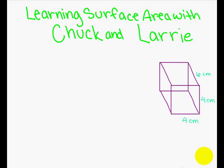Learning surface area with Chuck and Larry. Okay Chuck, so you start out with a rectangular prism with the dimensions of 6 by 4 by 4.